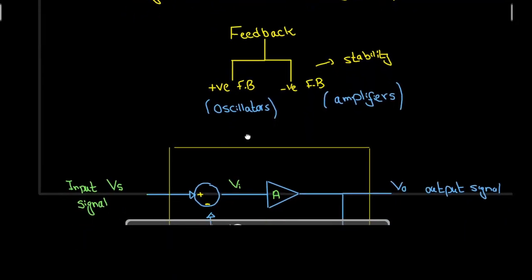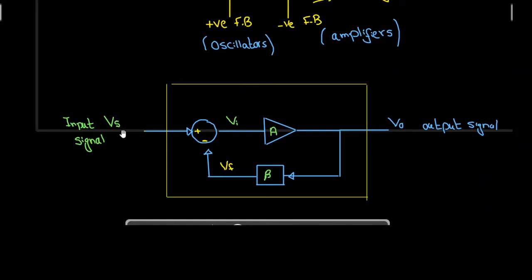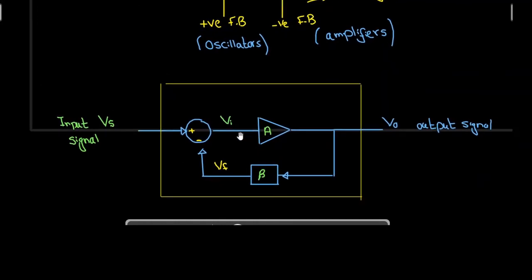Let us now study the block diagram of the feedback circuit. We have the input signal Vs, then a mixer — also called an adder — followed by the amplifier circuit, and then we have the feedback network. This is my output voltage, and we have the feedback network or feedback circuit connected back to the input.